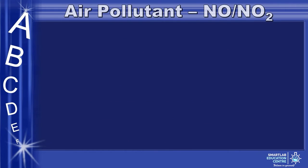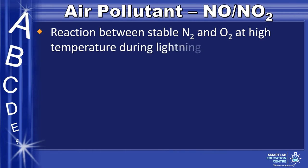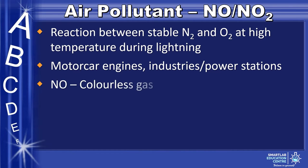The last example of an air pollutant is nitrogen monoxide or nitrogen dioxide. It is formed from the reaction between stable nitrogen and oxygen at high temperature during lightning, or from motor car engines, industries, or power stations. The color of NO is colorless while the color of NO₂ is brown, and it damages lungs and causes eye irritation.